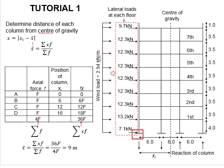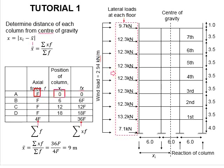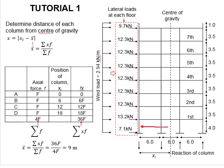Taking point A as the reference point, the positions of the columns are 0 meters, 6 meters, 12 meters, and 18 meters. Taking the axial force as f and the positions as x, the multiplications give fx. So f times 0 equals 0, f times 6 equals 6f, and so on. The summation of all fx gives sigma(xf), which is substituted into the equation to obtain the center of gravity at 9 meters from the reference point of column A.